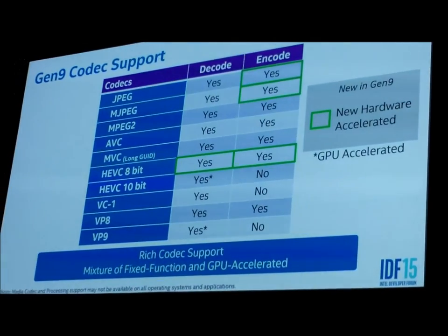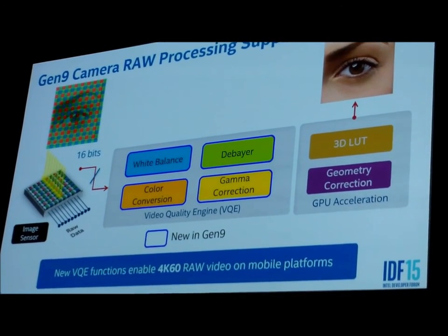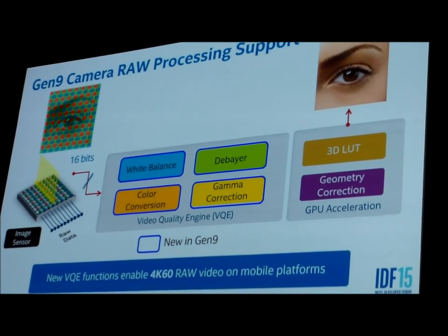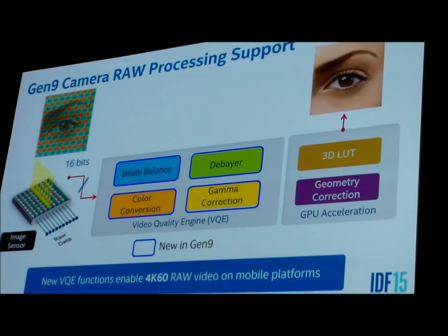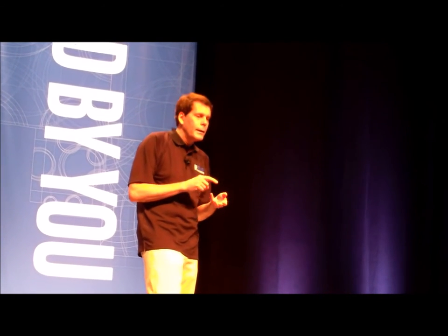For camera raw processing: the idea is to take high-quality 16-bit sensor data coming from a 4K 60fps camera and process it — doing white balance, demosaic, color conversion, gamma correction, geometry correction, and final color enhancement — and output an RGB image. These new blocks inside the video quality engine provide the capabilities to do that with the power performance that allows processing 4K 60fps in a mobile power envelope using these fixed-function blocks.